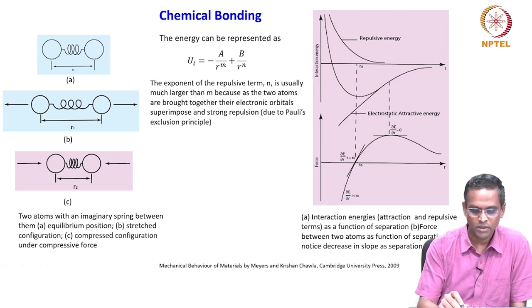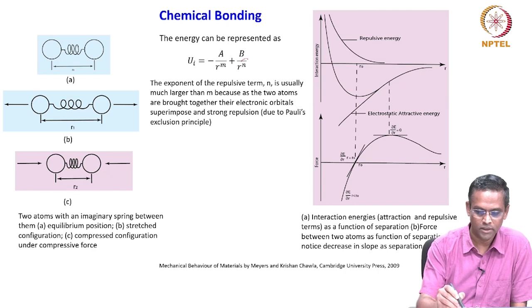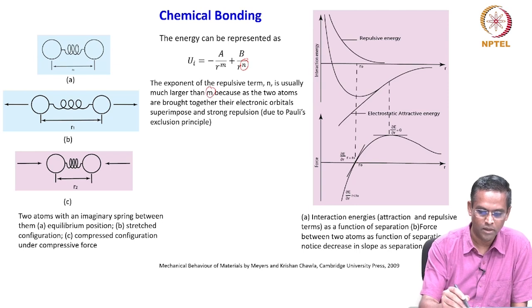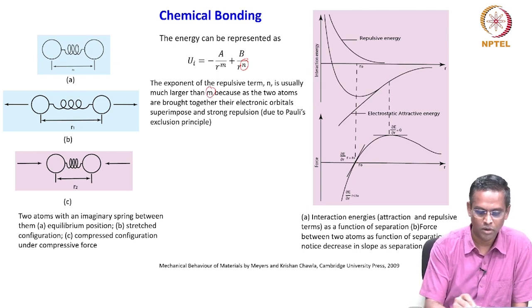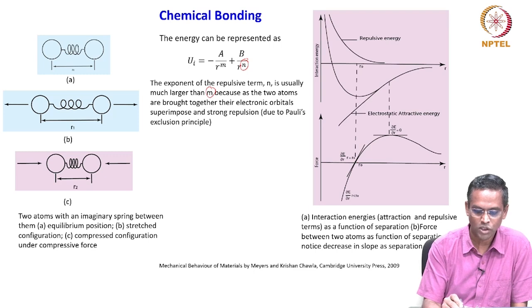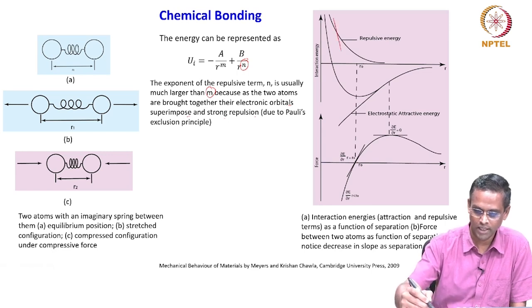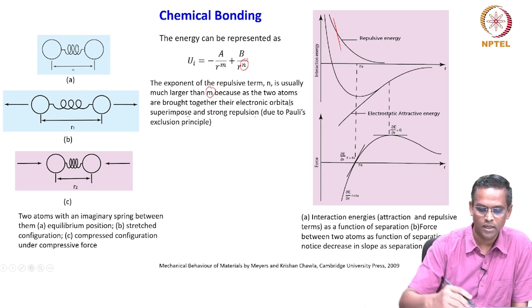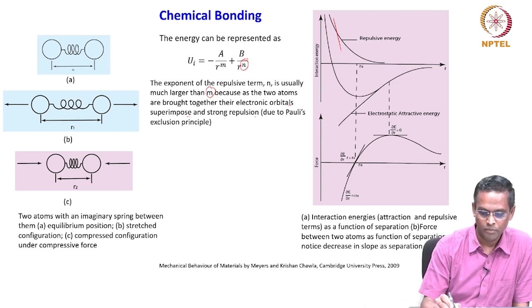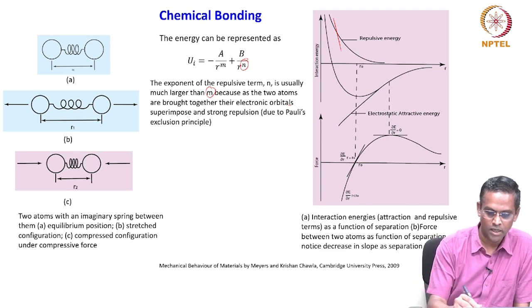The exponent of the repulsive term n is usually much larger than m, because as two atoms are brought together their electron orbitals superimpose and strong repulsion occurs due to Pauli's exclusion principle. We know all this, but we are now connecting all of them.